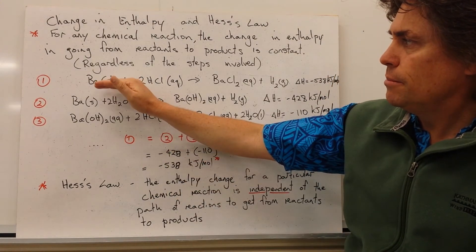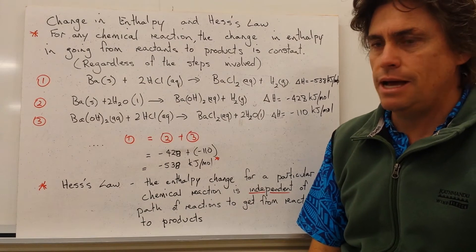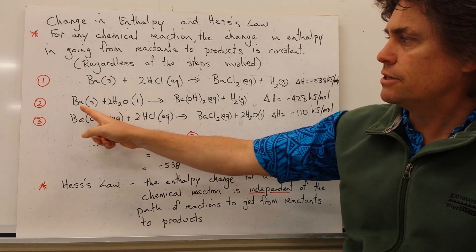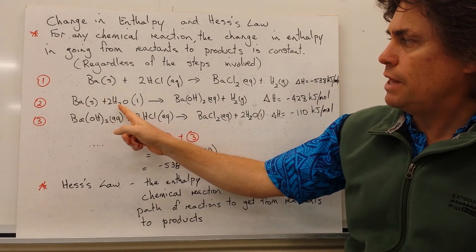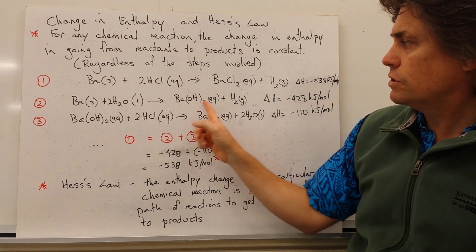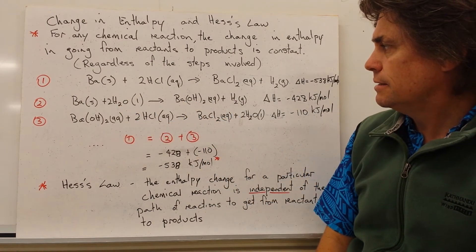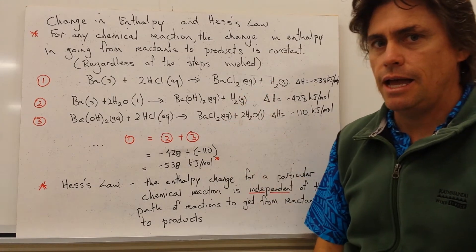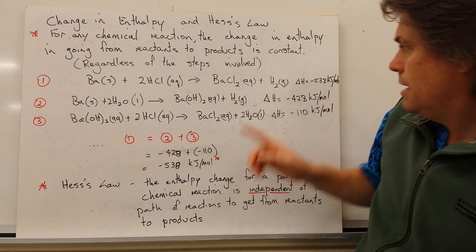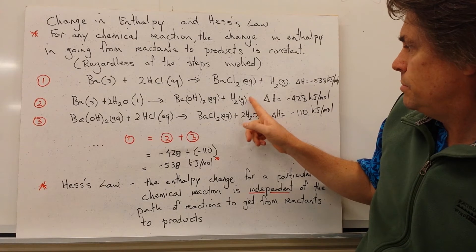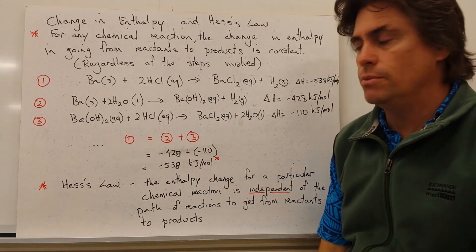Now we can also break this reaction down into two parts. So the second reaction, we're putting barium with our water, and that's giving us barium hydroxide and hydrogen gas. So we're getting one of our products out of this particular reaction. And the change in enthalpy value for this particular reaction is minus 428 kilojoules per mole.